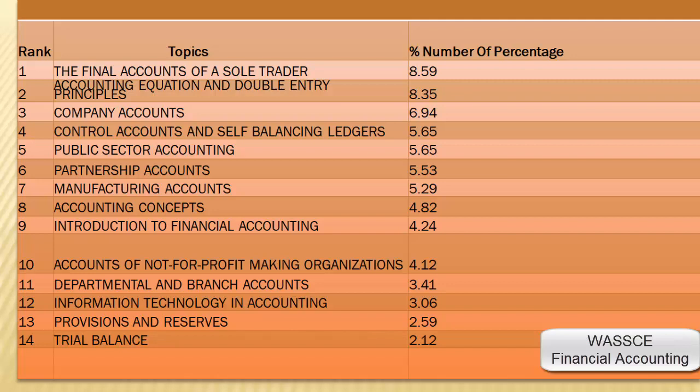Control accounts: 5.65%. Public sector accounting: 5.65%. Partnership accounts: 5.53%. Manufacturing accounts: 5.29%. Accounting concepts: 4.28%.